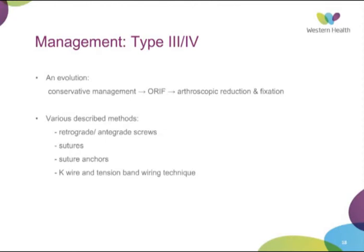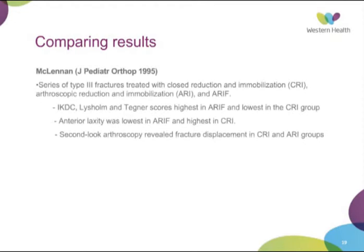Comparing fixation methods: McLennan in 1995 did a series of type 3 fractures comparing closed reduction versus arthroscopic reduction versus arthroscopic reduction and fixation. Knee scores — patient-reported outcomes and clinician measures — were highest in the arthroscopic reduction and fixation group. Anterior laxity of the ACL was lowest in the arthroscopic reduction and fixation group compared to closed reduction. Second-look arthroscopy revealed fracture fragment displacement was higher in the closed reduction group.